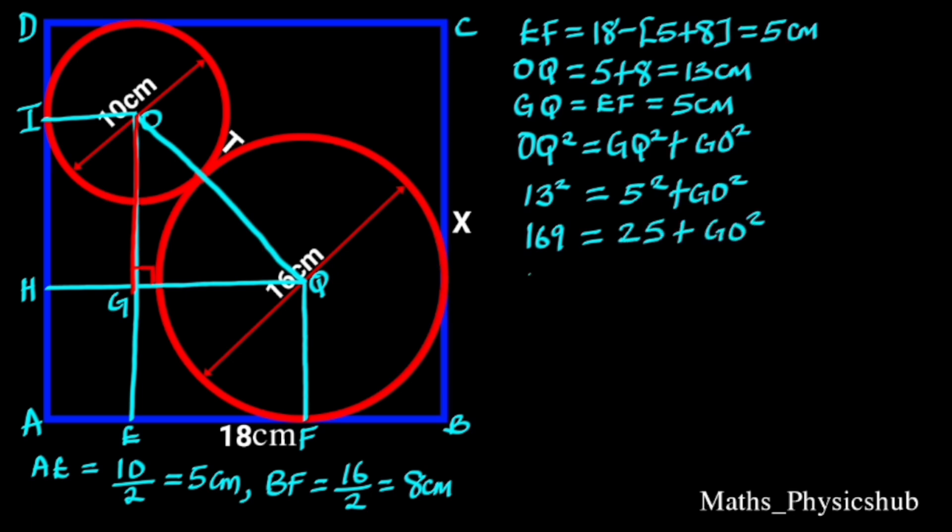To find GO, we take 25 to the right side. 25 going to the right will become negative. It follows that 169 minus 25 equals GO square. 169 minus 25 equals 144, so 144 equals GO square. Taking the square root of both sides will give us GO equals square root of 144, which is 12 cm.